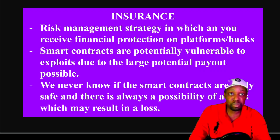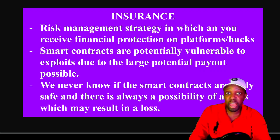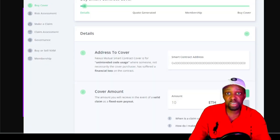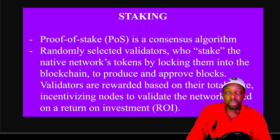Insurance is a risk management strategy offering financial protection in case of hacks on DeFi platforms. Smart contracts are potentially vulnerable to exploits — if a platform like Aave holds $6 billion, hackers will target it. You can go to Nexus Mutual, enter the smart contract address, specify coverage amount, and pay a fixed fee to be covered for say 8 months. You'll never know if a smart contract is truly safe, so insurance protects against loss of funds from hacks.